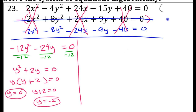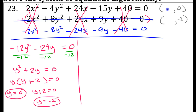So that tells me I have something comma 0 and something comma negative 2. I need to find the x values that go with these y values. To do that, I need another equation to substitute into, so I have no choice but to go back to one of the original equations. It doesn't really matter which one.